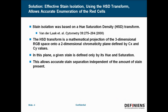To get this effective stain isolation, we use a technique called the hue saturation density transform as proposed by Vanderlake et al. in Cytometry of 2000. The HSD transform is a mathematical projection of the three-dimensional RGB space onto a two-dimensional chromaticity plane defined by CX and CY values. In this plane, a given stain is defined only by its hue and saturation, and this allows accurate stain separation independent of the amount of stain.